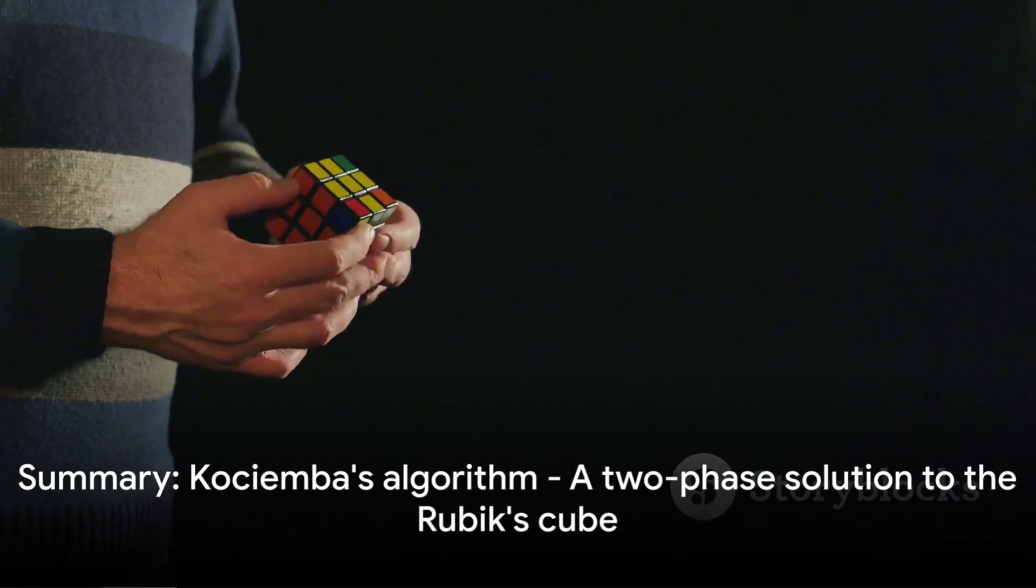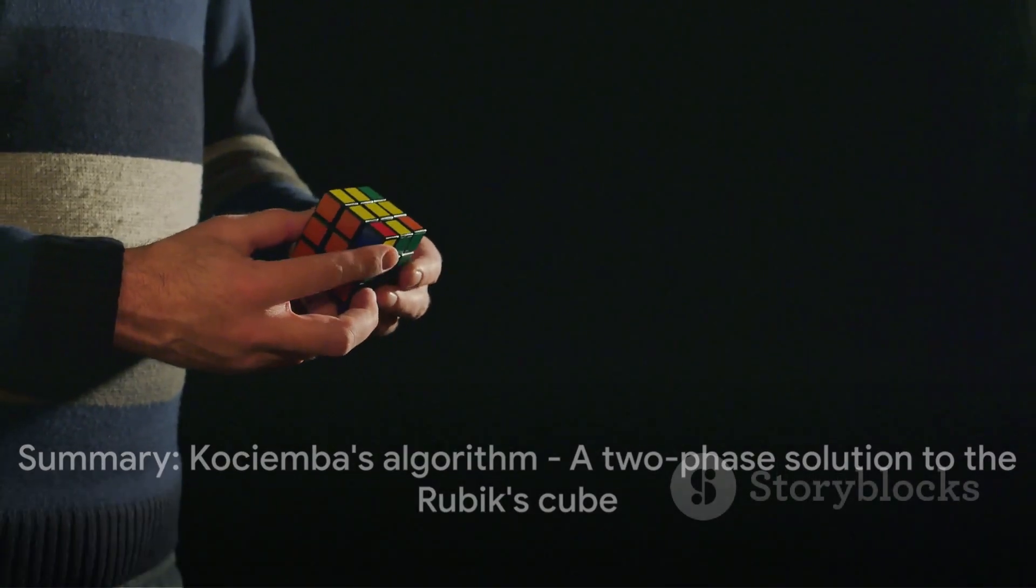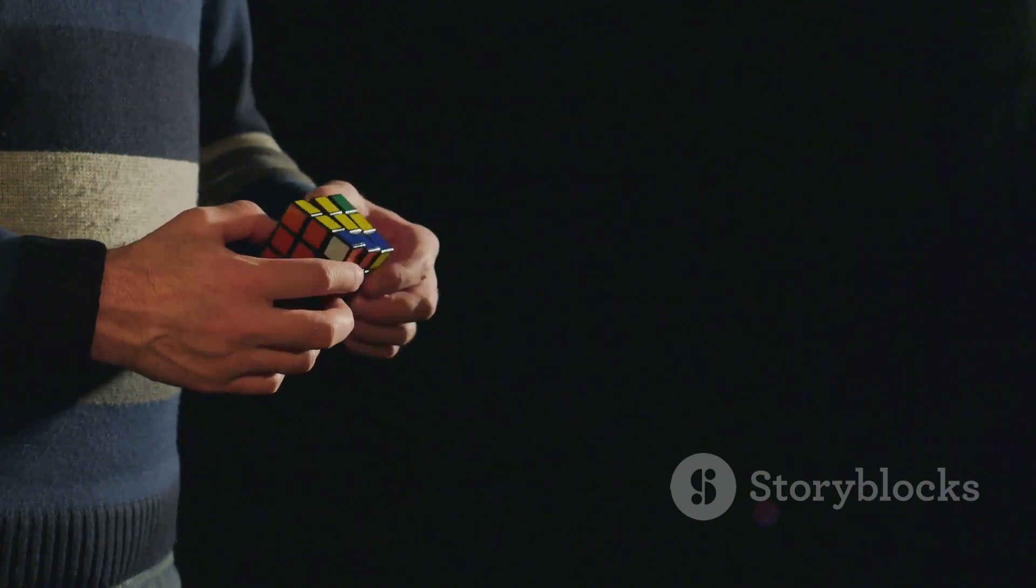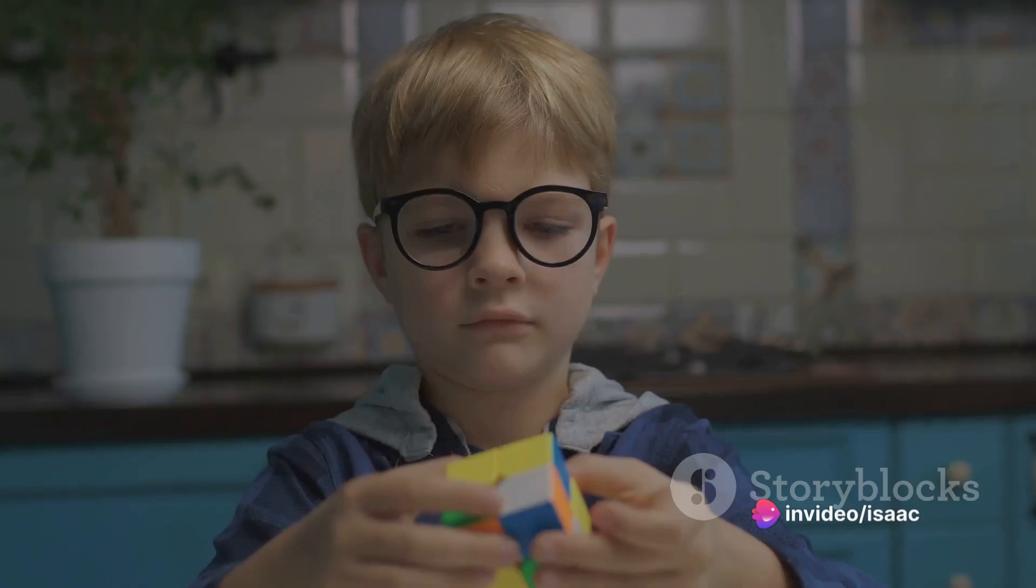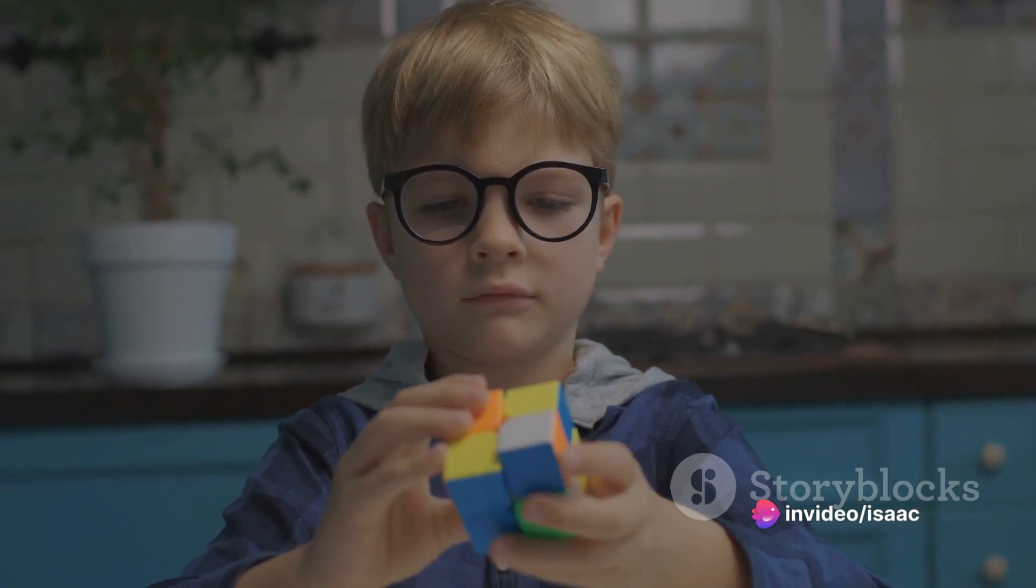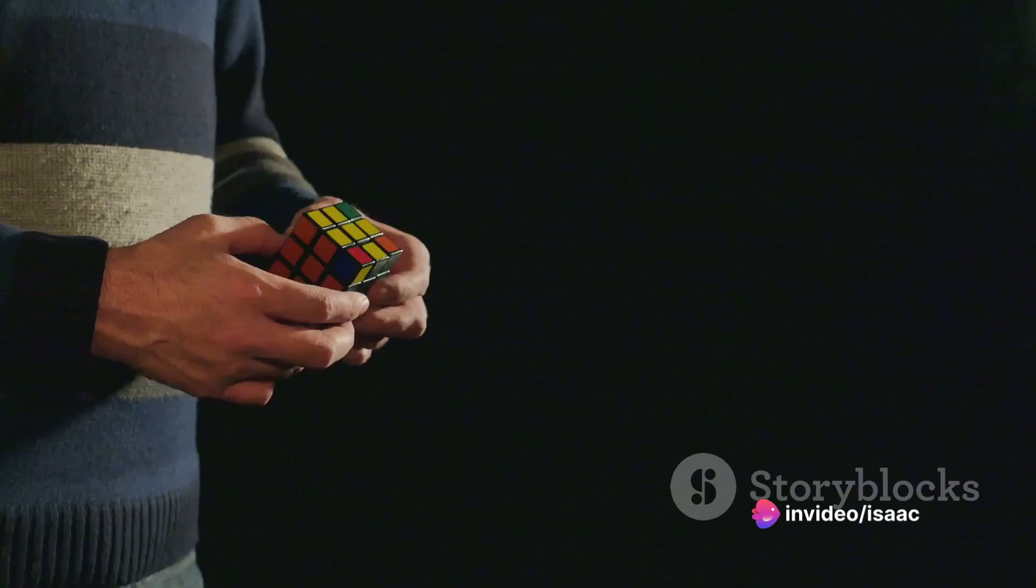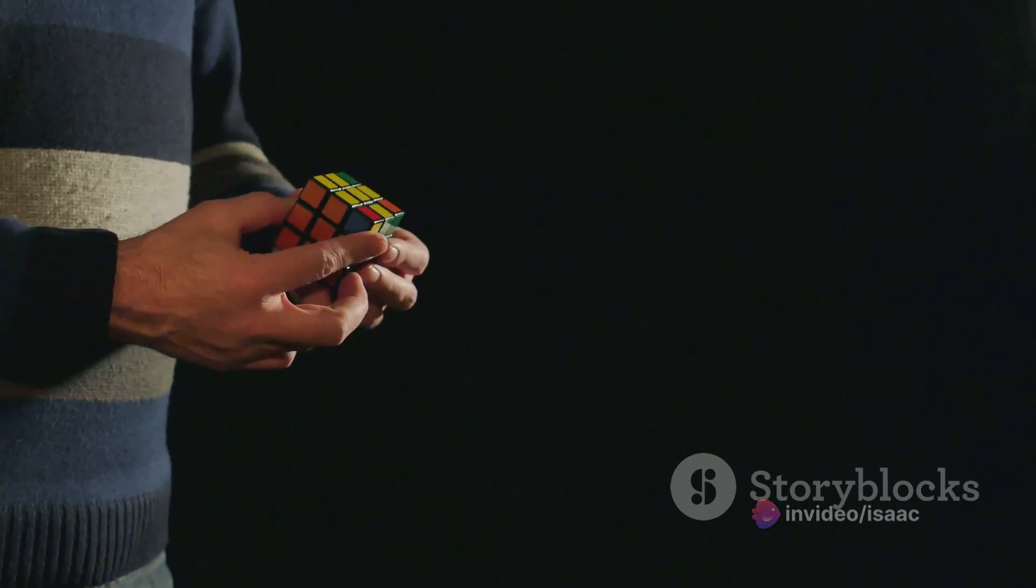In summary, Kociemba's algorithm is a two-phase solution to the Rubik's cube. It first reduces the complexity of the cube, making it manageable. Then, it precisely navigates to the solution from this simplified state. And it does all of this in less than 20 moves.